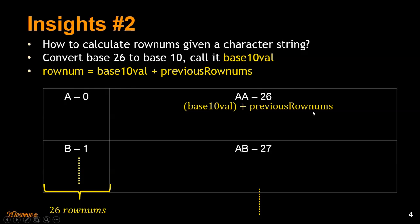So base 10 value plus previous row numbers. So how do you calculate the base 10 value? We'll use the formula that we generally use to convert one base to another. For this case, we'll start with the 10th place. So A into 26 power 1, which is 26 is the base.